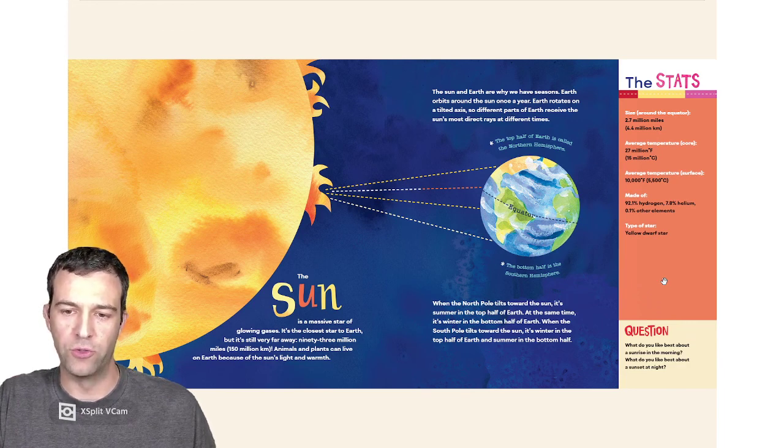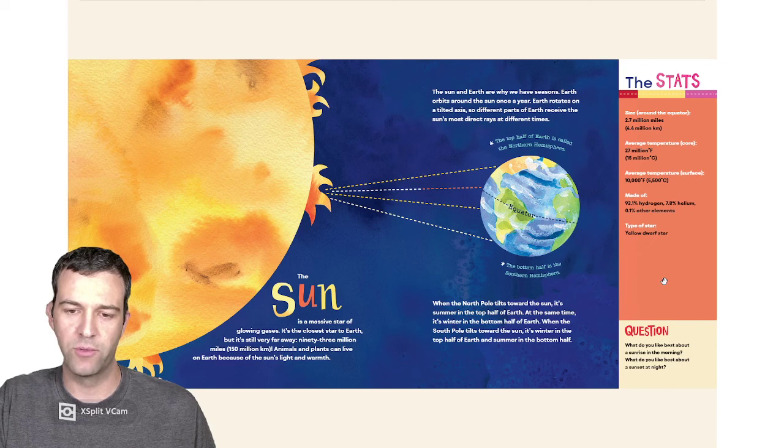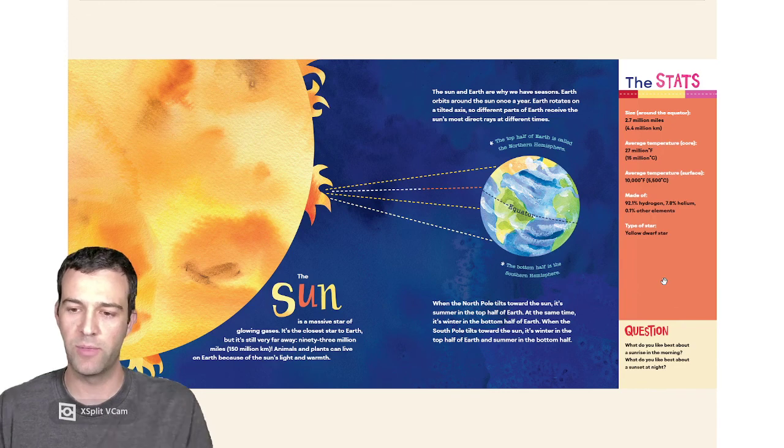When the North Pole tilts toward the Sun, it's summer in the top half of Earth. At the same time, it's winter in the bottom half of Earth. When the South Pole tilts toward the Sun, it's winter in the top half and summer in the bottom half.